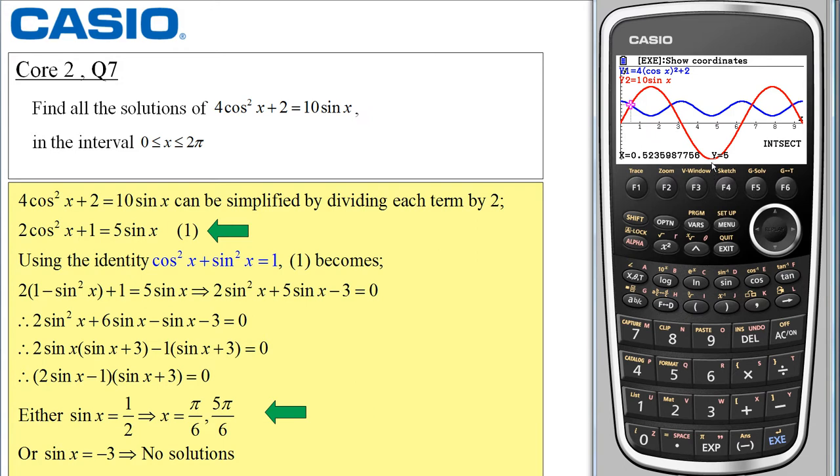The y coordinate of course is 5 and the x coordinate is 0.5235 etc. What you'll notice is that this decimal is actually 1 6th of pi and you can confirm that with a simple calculation. So that gives me the first solution I have here so I can confirm that one.